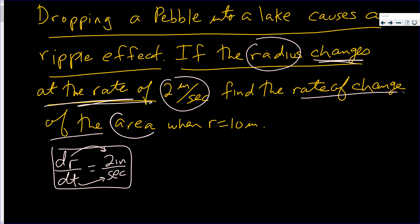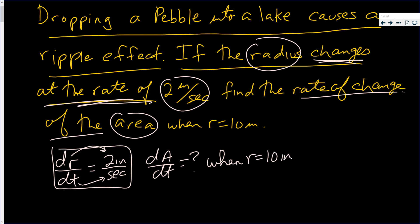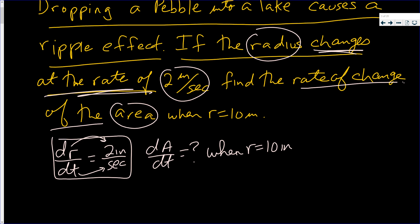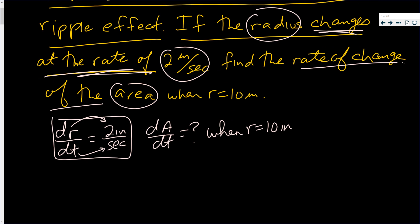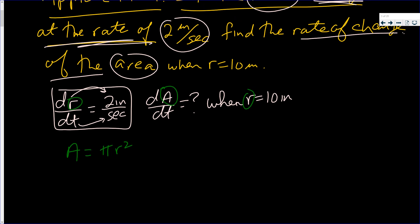They say find the rate of change of the area A. Find dA/dt when r is 10 inches. We have an A and an R, so we use the area of a circle: A = πr². That's the hard part — you need to know that formula. Now take the derivative with respect to t.